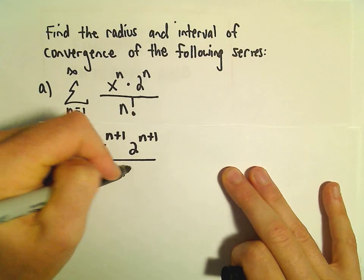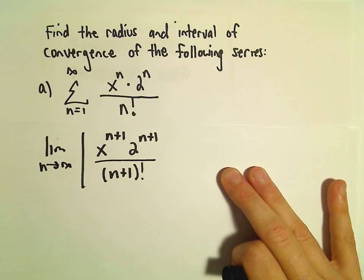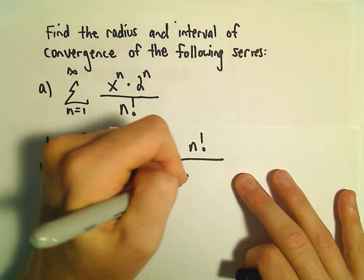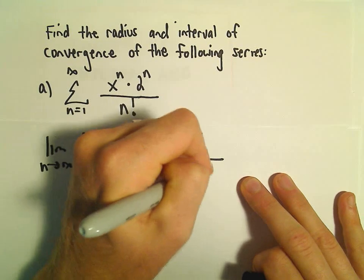So then we would have n plus 1 factorial in the denominator. Then we have to flip and multiply by the reciprocal, so n factorial over x to the n times 2 to the n.